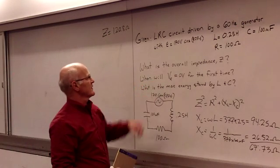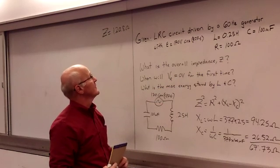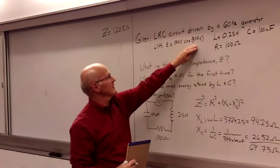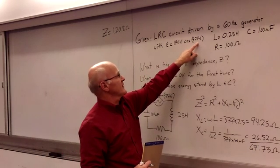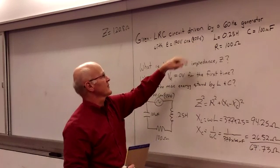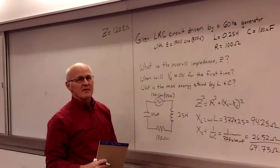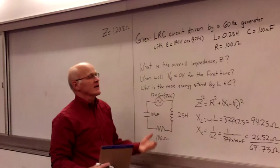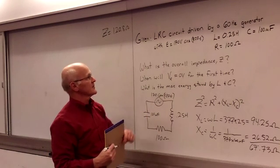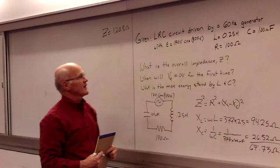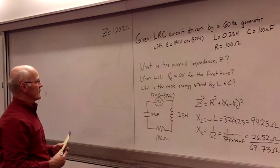Next question is, when will VR, the voltage on the resistor, be equal to 0 for the first time? So by looking at our equation driving our circuit, we can see that at time 0, cosine of 0 is 1. So we start off with the generator at its maximum voltage. An unlikely scenario in real life, but we're going to do that kind of a problem just to show you how to operate with cosine instead of the normal sine equation.